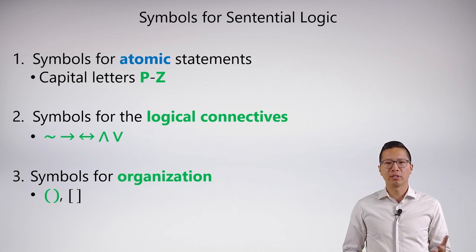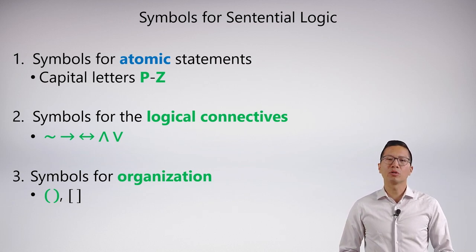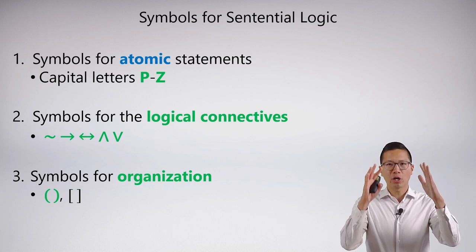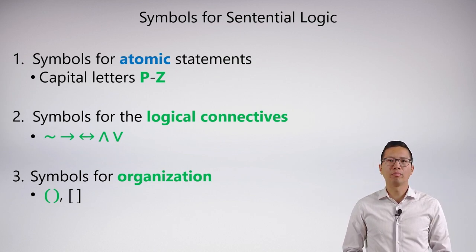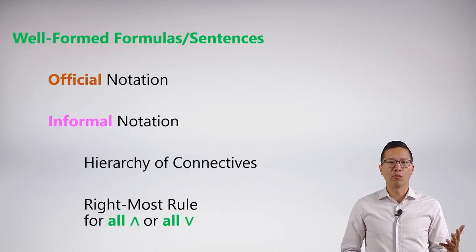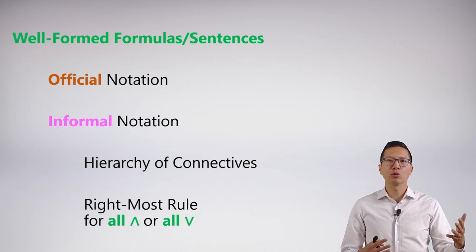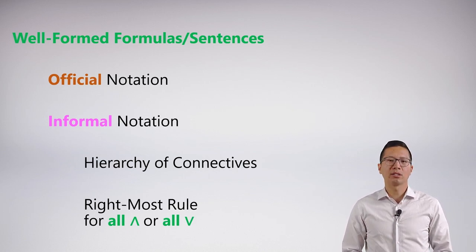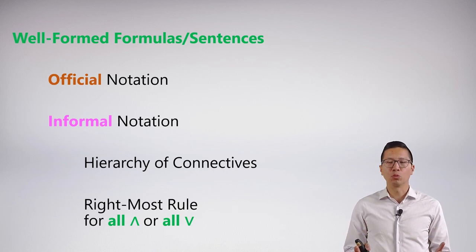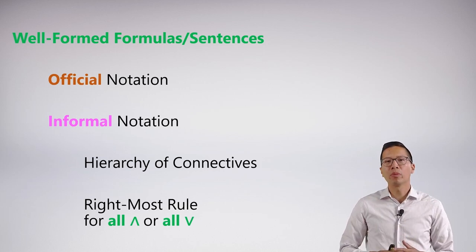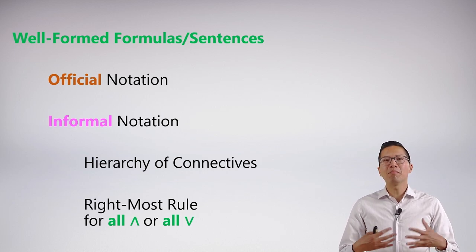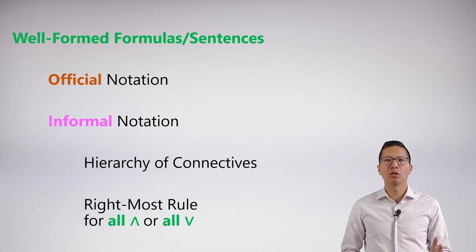In Unit 2, we learned about the symbols for sentential logic. We have atomic statement letters, which are capital letters P through Z. We have our five symbols for the logical connectives, which are very important. And we have parentheses for organization — in general, I'll just be using the round parentheses moving forward. I made an important distinction in Unit 2 about well-formed formulas and sentences, and well-formed formulas can come as official or informal. What's really important is that you remember the hierarchy of connectives and the rightmost rule for all the ands in a row and the ors in a row. Moving forward, I'm just going to say that if something is well-formed, I typically just mean that it's in official or informal notation — that is, that we can understand it without problem.